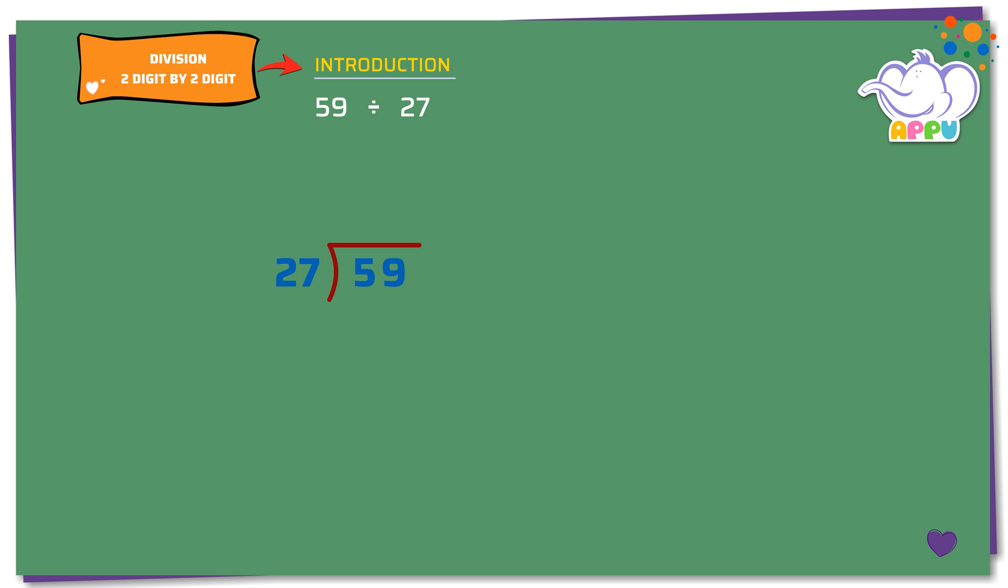Step 1: We can't divide 5 by 27 since 5 is smaller than 27. So, we consider the ones digit as well.